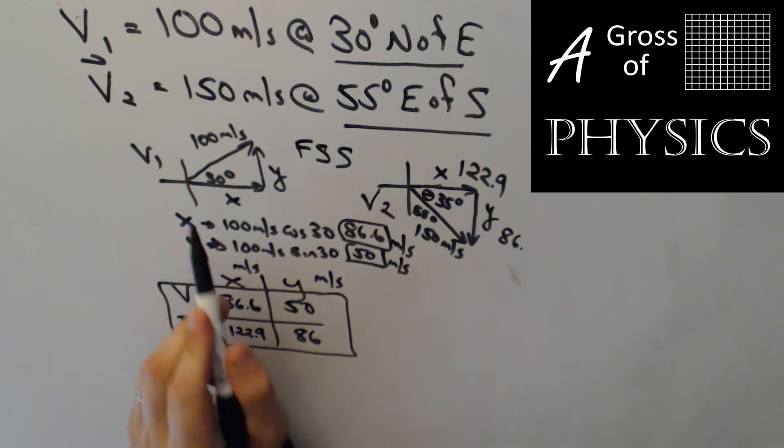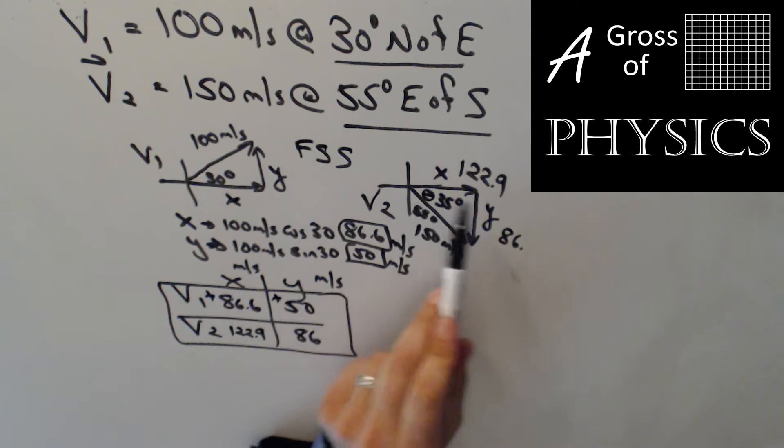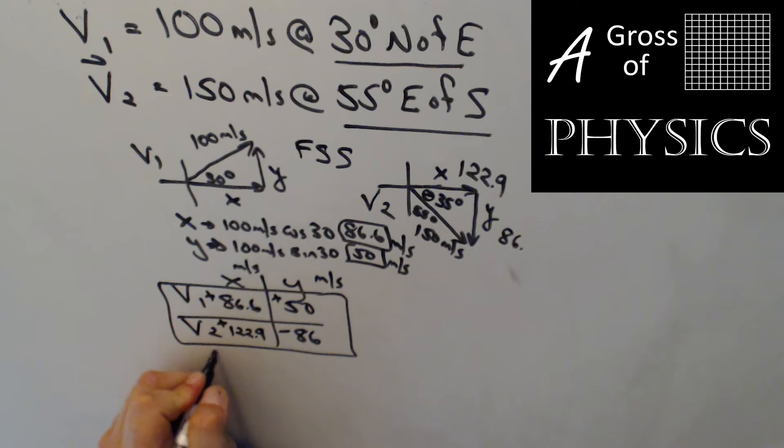For V1, x is positive, points to the right. Y is positive, points up. x is positive for the V2. However, the y is negative. And then because we have the chart, we just add down the column to get rx and ry, what I call my Franken vectors. It's putting together the body parts. 86.6 plus 122.9 is 209.5 meters per second. And 50 minus 86 gets me negative 36. Without the signs we'd be in trouble. Now here are the Franken vectors. We feel remorse. We want to put Frankenstein back together.